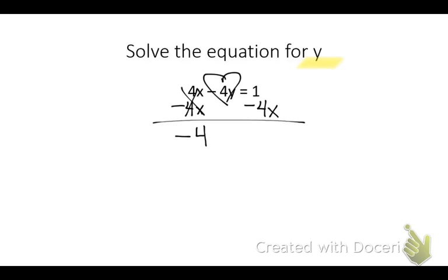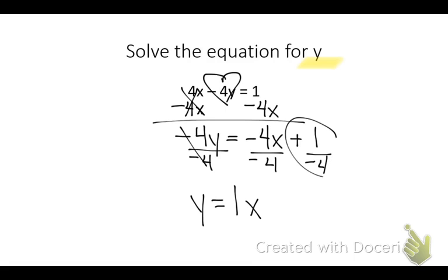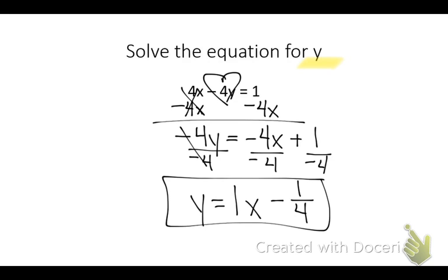Negative 4y equals negative 4x plus 1. Now, what do I need to divide everything by? Negative 4. Divide everything by negative 4. Be careful with your signs. y equals positive 1 or negative 1? 1x. Now, a positive divided by a negative, how many negatives are there? 1, so that's why it's going to be minus 1 fourth. That's definitely the harder of the two on your test tomorrow. Just to get y by itself, remember, there's two variables. You're not necessarily looking for an answer.